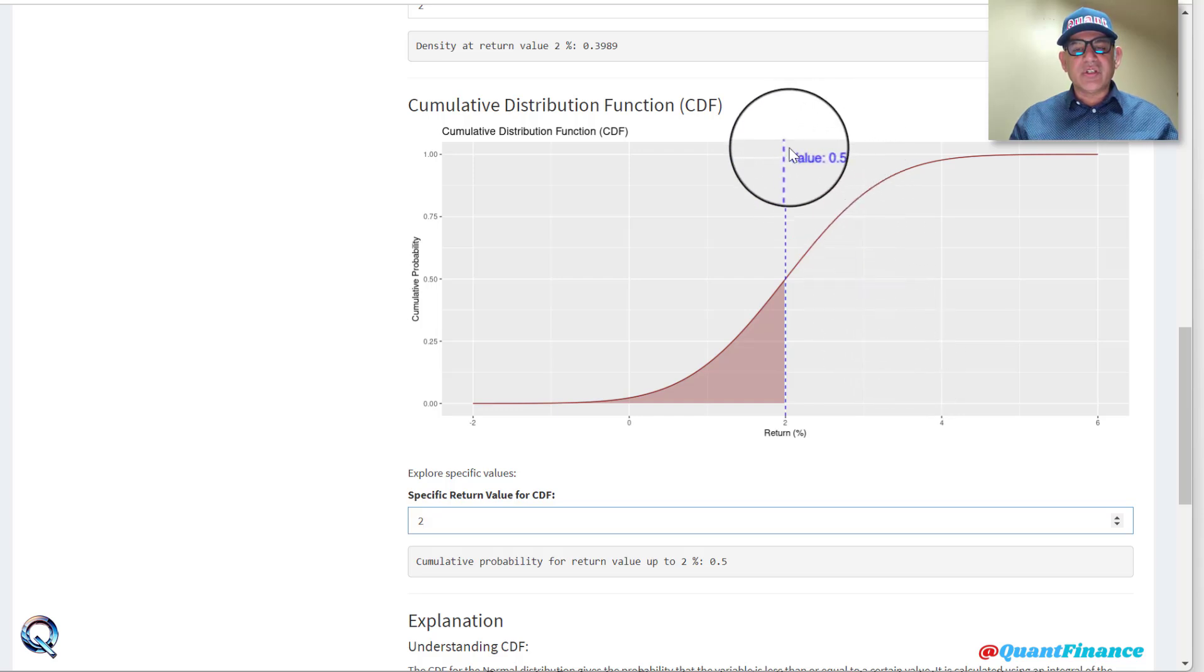Which means the 50% probability is the cumulative probability that yes, the return will be two percent or less than two percent.